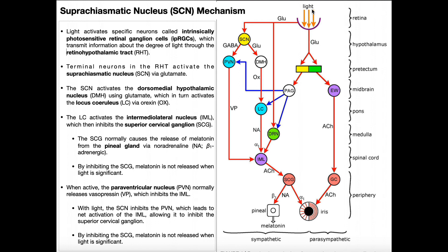If it's dark and there's no light, then there's no activation of the IPRGCs, and none of the other structures become activated. The suprachiasmatic nucleus is inactive, the DMH inhibited, the locus coeruleus inhibited, the intermediolateral nucleus inhibited. If the IML is not active, it's no longer able to inhibit the superior cervical ganglion. So when there's no light, the superior cervical ganglion remains active and is able to activate the pineal gland to release melatonin — the sleep hormone.